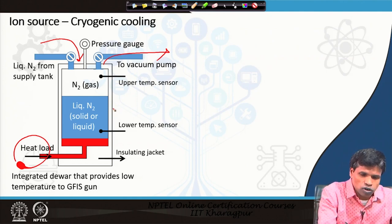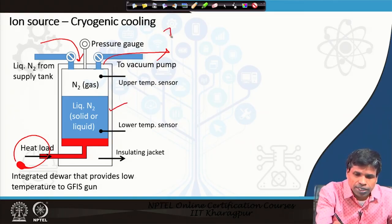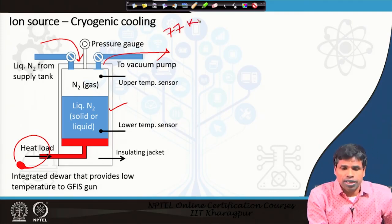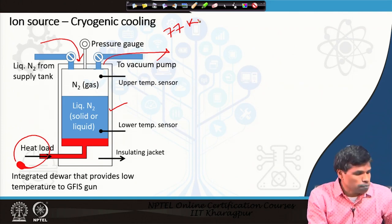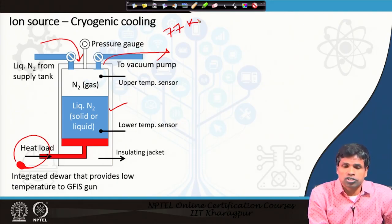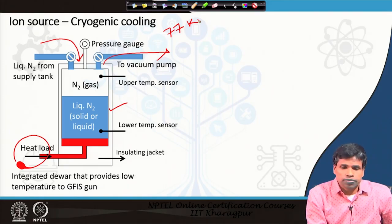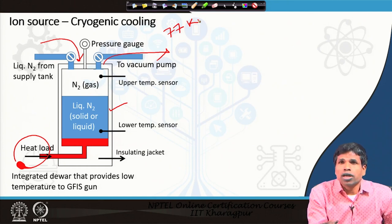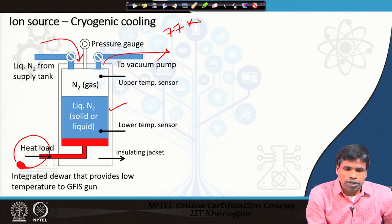The system uses a jacket arrangement. Liquid nitrogen is at 77 Kelvin, and our tip has to be cooled to that same order of temperature for efficient operation of the gas field ionization source. However, liquid nitrogen will be boiling and producing a lot of vibration, so simple liquid nitrogen cannot be used directly for cooling.